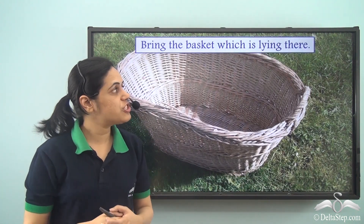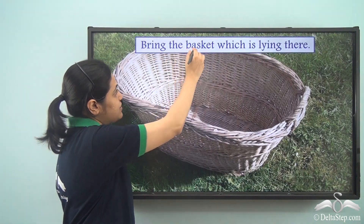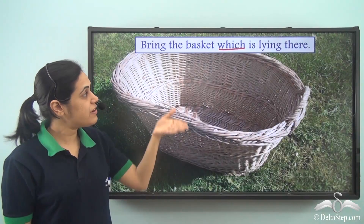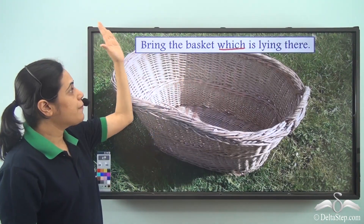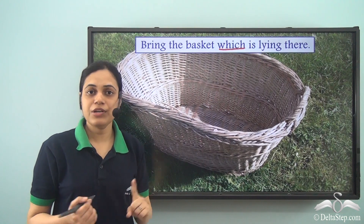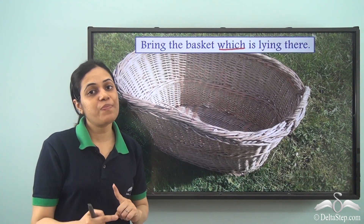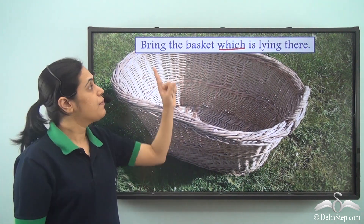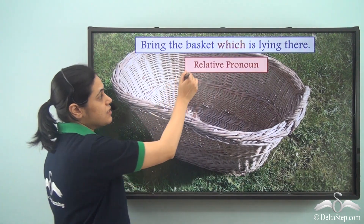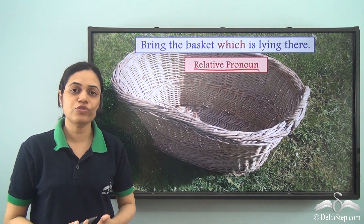'Bring the basket which is lying there.' What is the pronoun here? 'Which' is the pronoun. If I break the sentence it becomes: 'Bring the basket — it is lying there.' So the word 'which' joins the two sentences and also relates to the basket: 'which basket should we bring?' Hence it is a relative pronoun — it joins two sentences and is also used to relate.